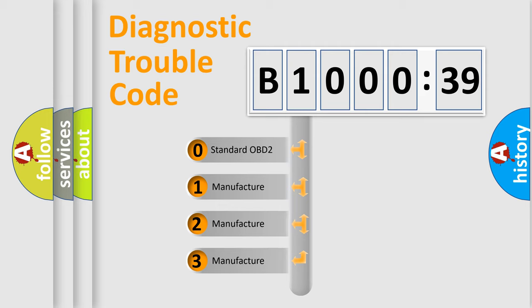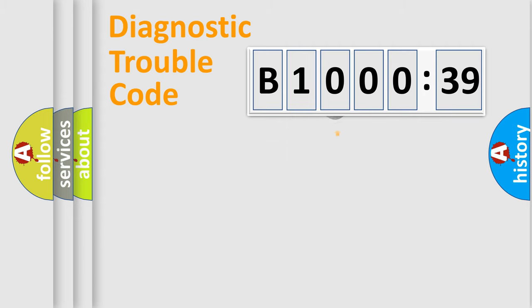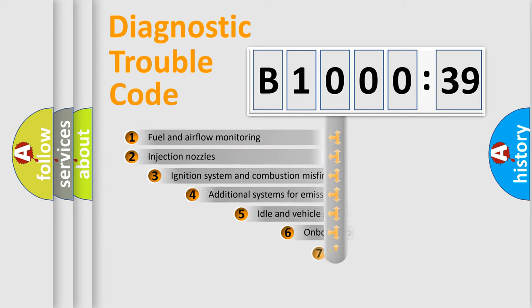If the second character is expressed as zero, it is a standardized error. In the case of numbers 1, 2, or 3, it is a more prestigious expression of the car-specific error.